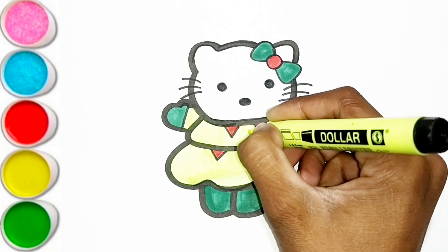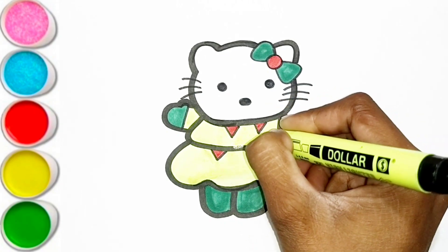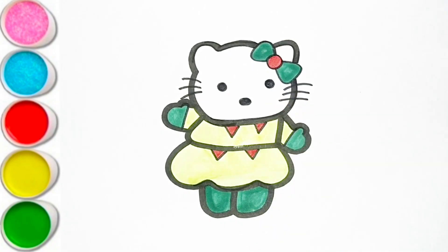E is for Elephant, E-E-Elephant. F is for Frog, F-F-Frog. G is for Goat, G-G-Goat. H is for Hand, H-H-Hand.